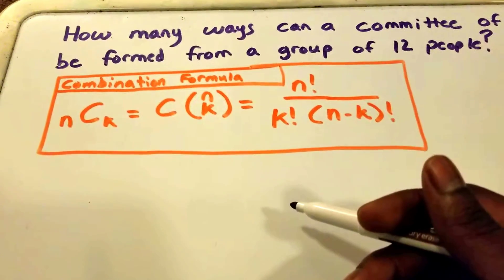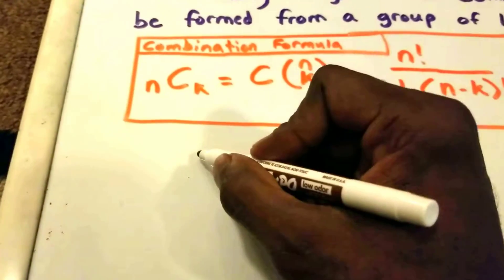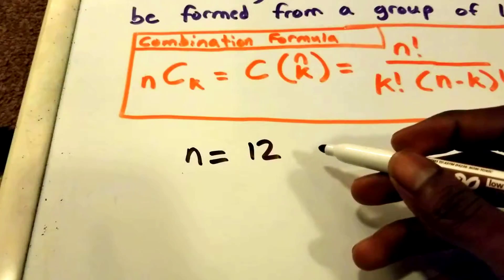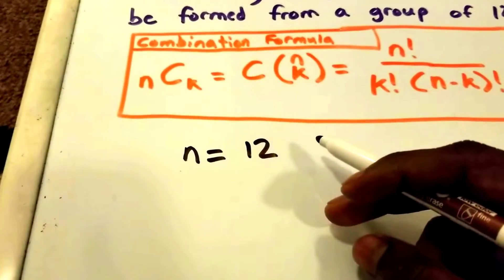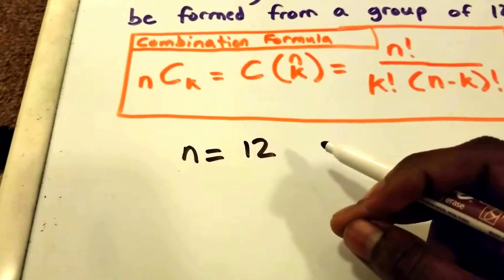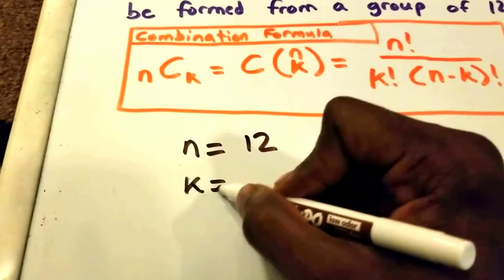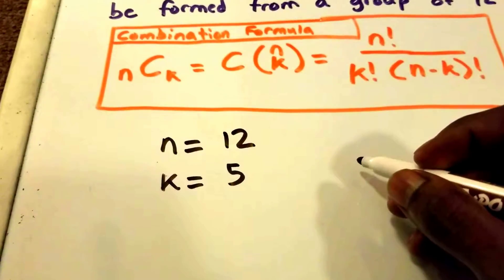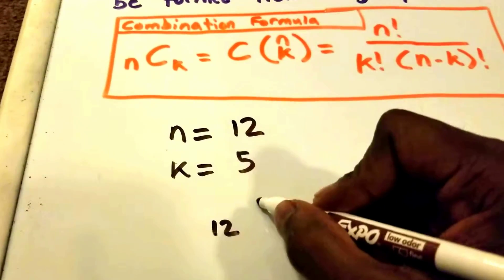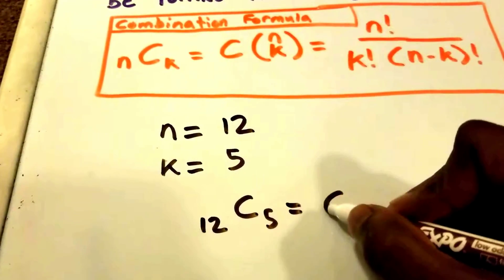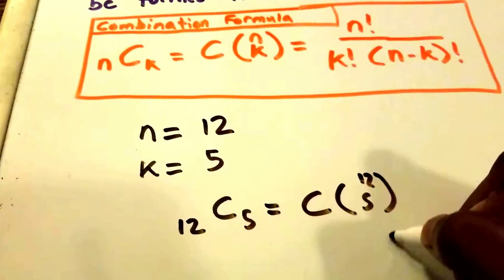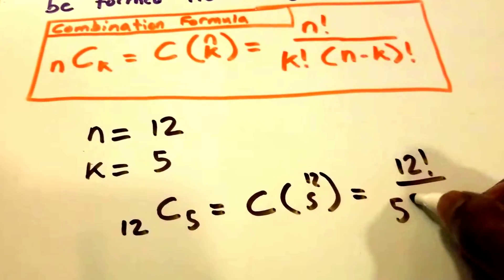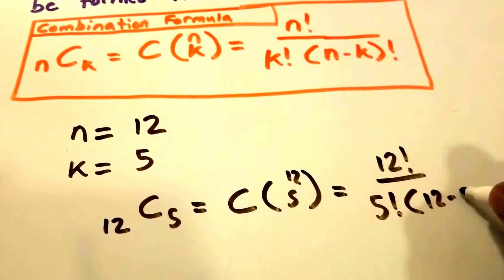This is the formula we're going to use to solve this problem. Our n value is 12 - we have a total of 12 people in our set. We want to know how many ways a committee of five people can be formed, so our k value is 5. The formula will be 12C5, which is also equal to C(12,5). This equals 12 factorial over 5 factorial times 12 minus 5 factorial.